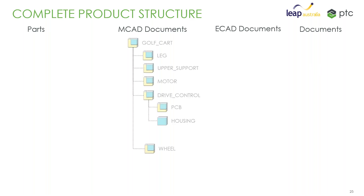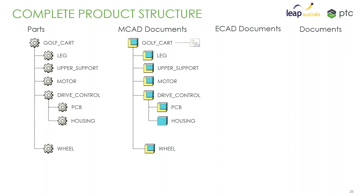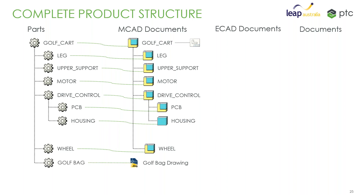It might be the case that you start with some MCAD data, like our golf cart. I've got a fancy electronic golf cart with a drive control unit that follows you around the golf course. We've got a mechanical design for that, there might be some drawings that go with that, we can check all that in and create a structure from that. We've got those relationships between the parts and the CAD that describes it in a 3D model, drawings as well. We might also have other 2D drawing CAD information like our golf bag, which we can add into the structure. We can take our manual, our documentation, and add that into the structure and relate it to documents stored in Windchill.